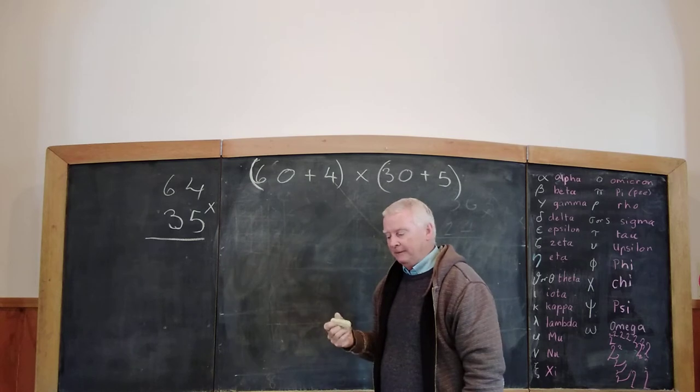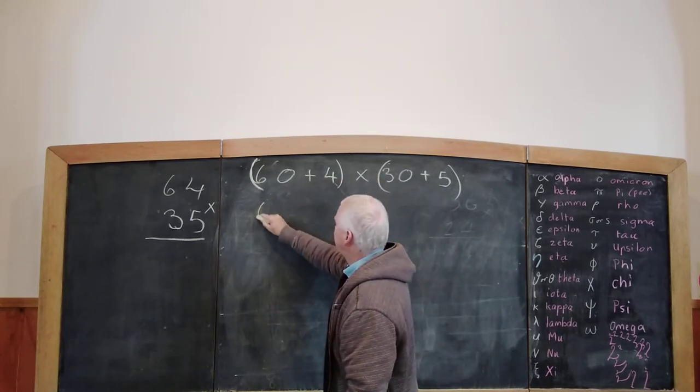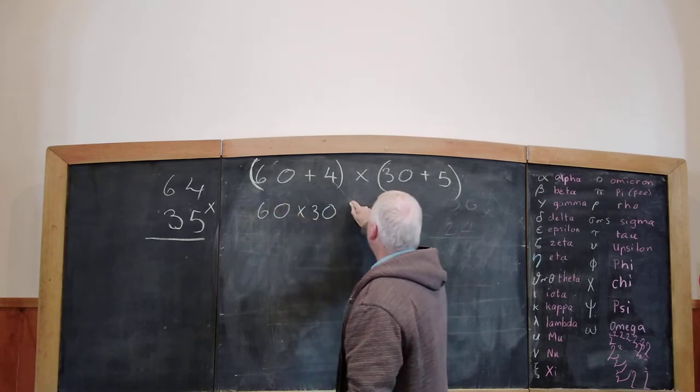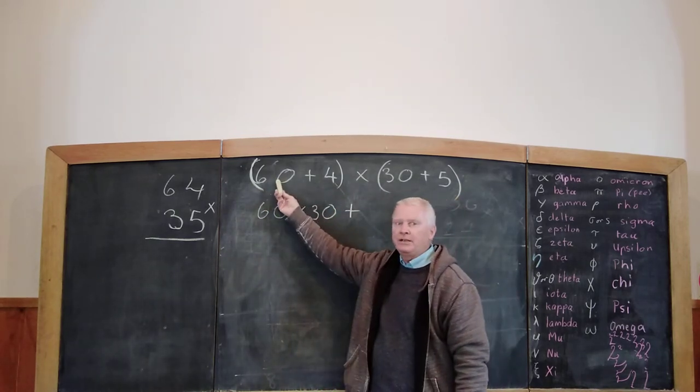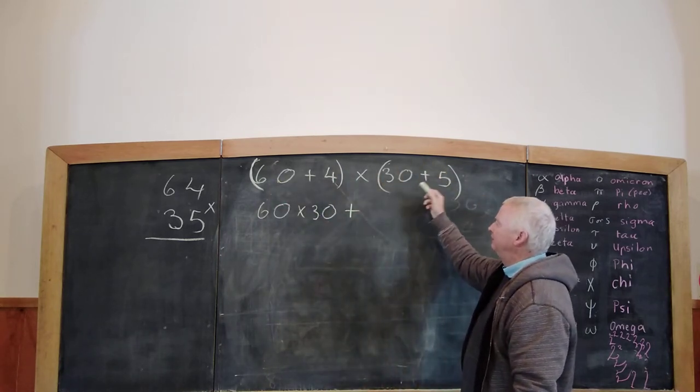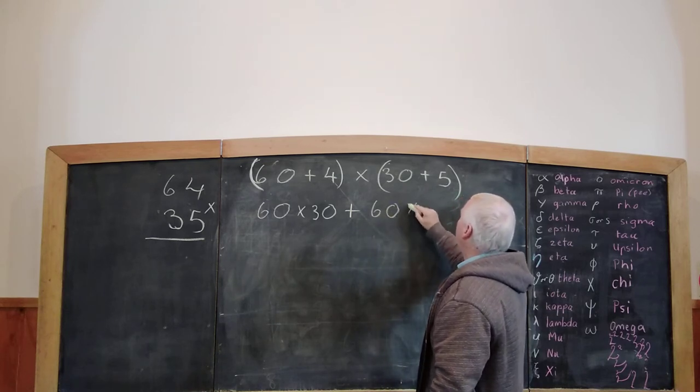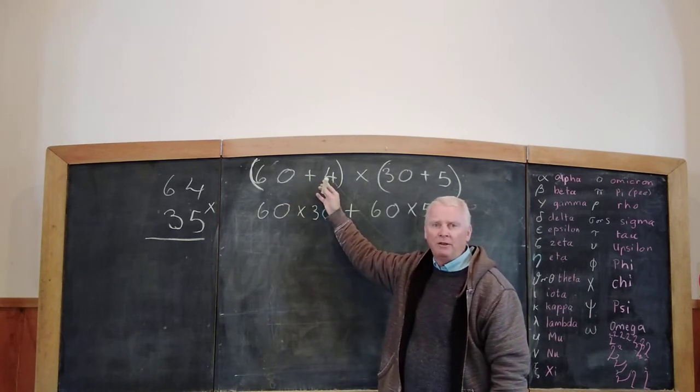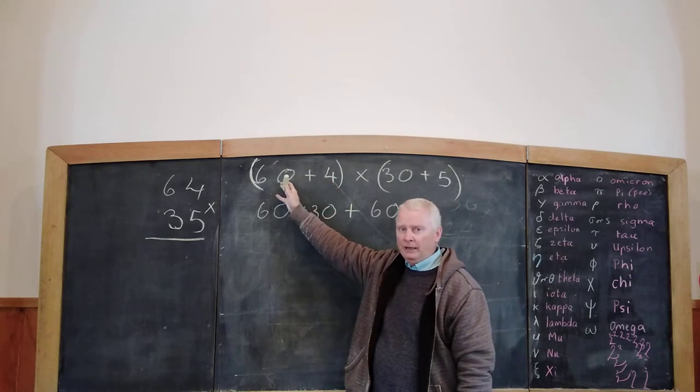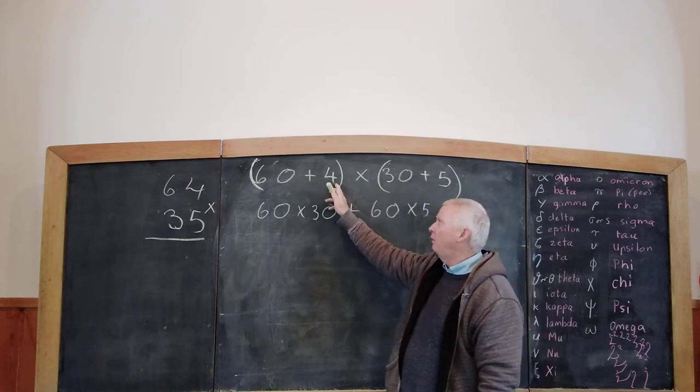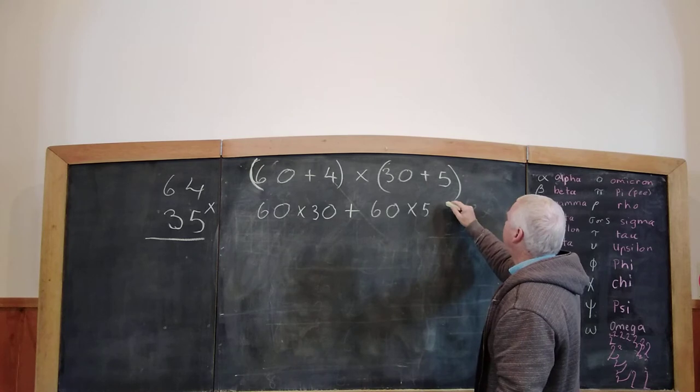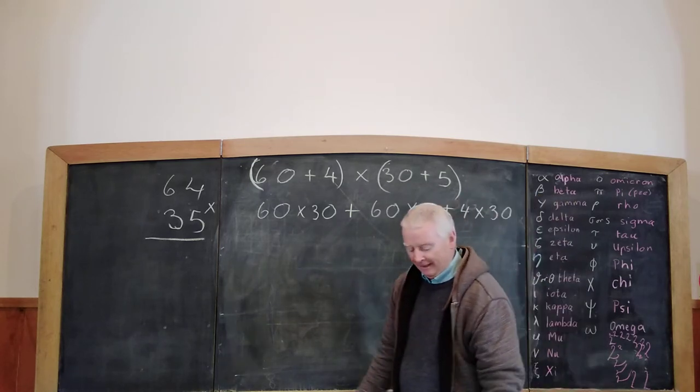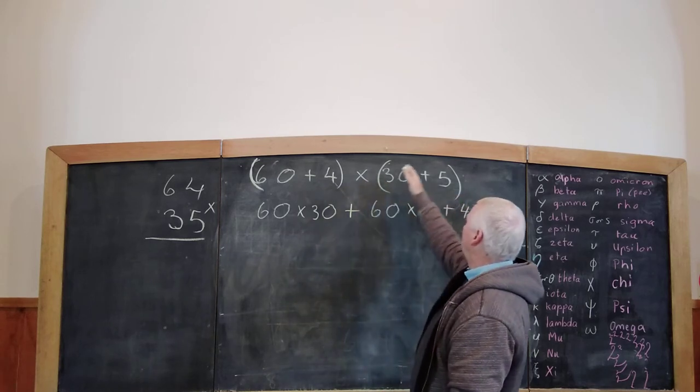So, we're going to focus on 60. So, 60 times 30, 60 times 30. And then we're going to plus 60 times 5, 60 times 5. Now, we're finished with the 60. We'll focus on the 4. Everything in this bracket has to apply against every number in this bracket. So, 4 times 30, 4 times 30. Then we have 4 times 5.